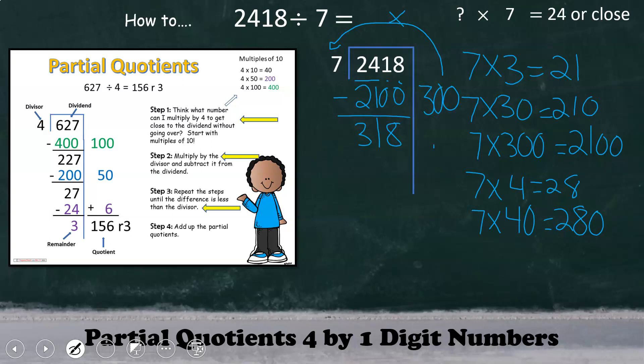Remind students that as they line up their partial quotients, they want to line them up according to place value. After writing the 40, we then multiply it by 7, giving us 280, and then subtracting that from 318, leaving us with a difference of 38.